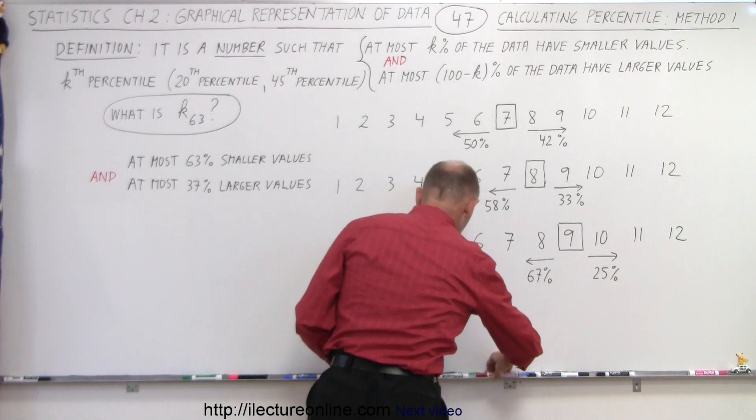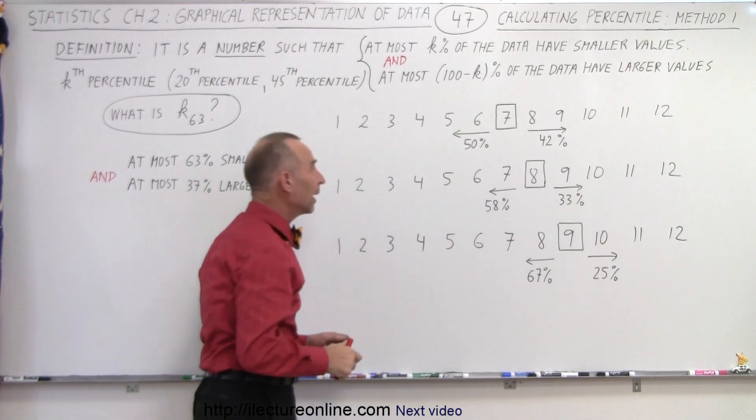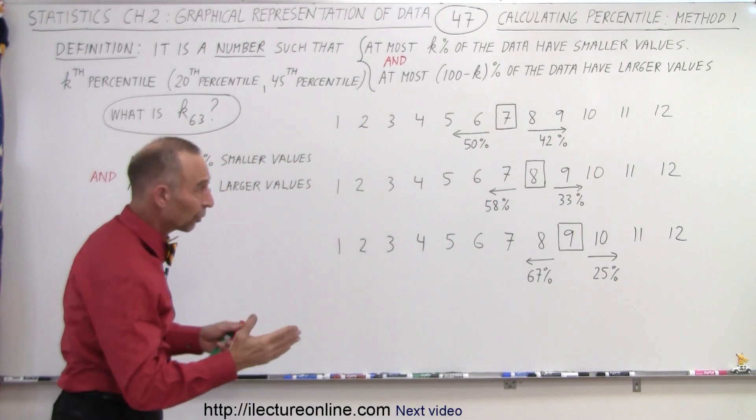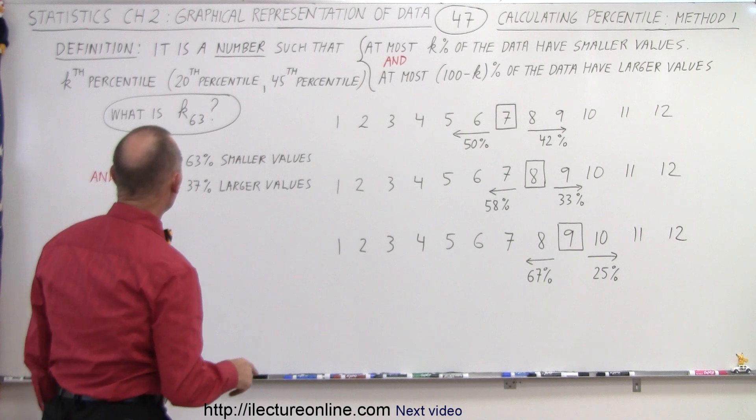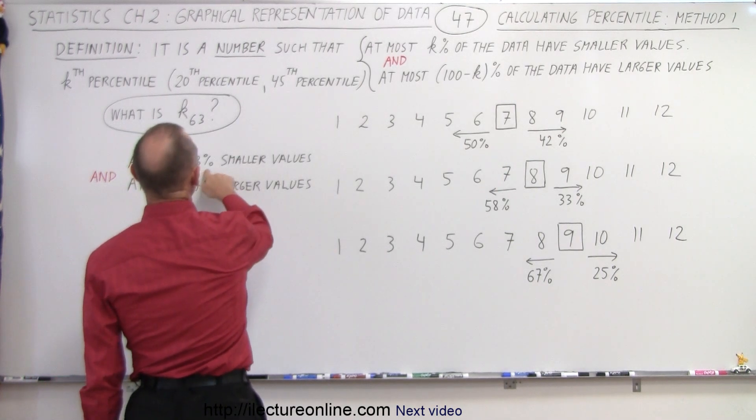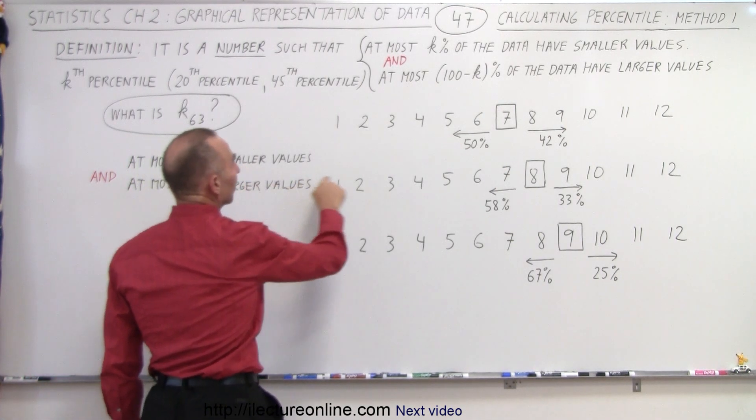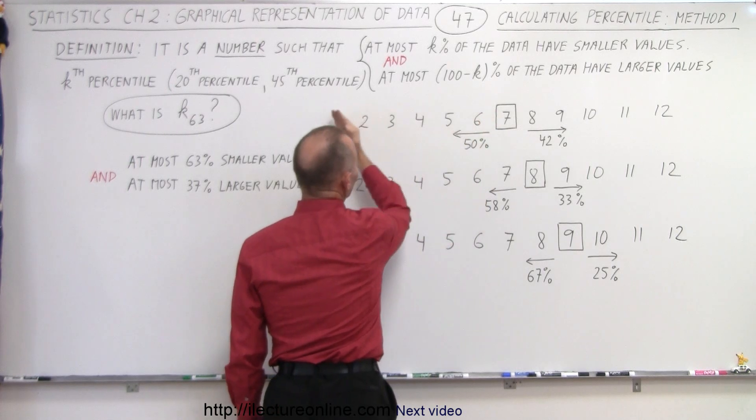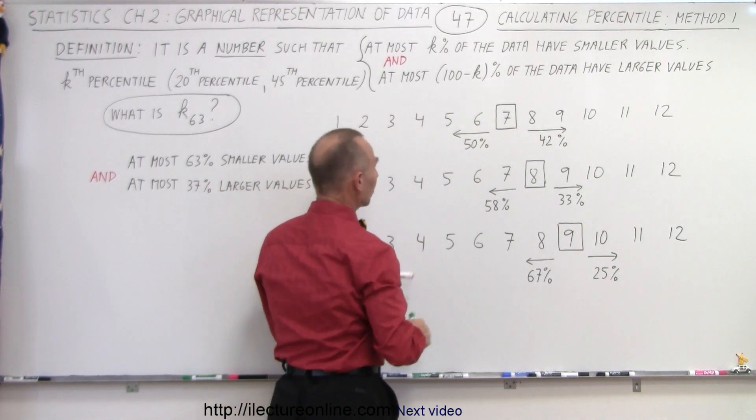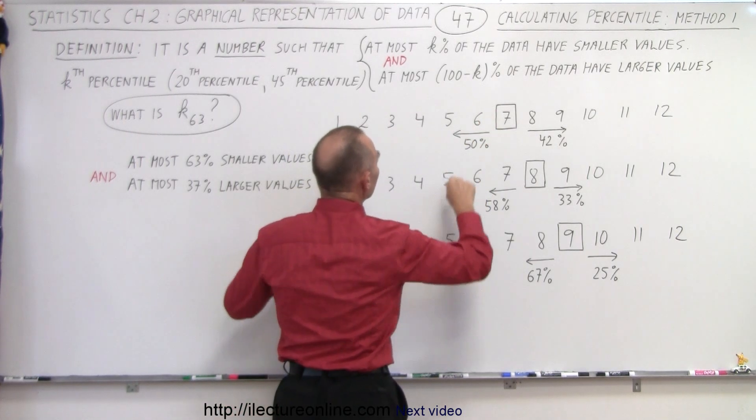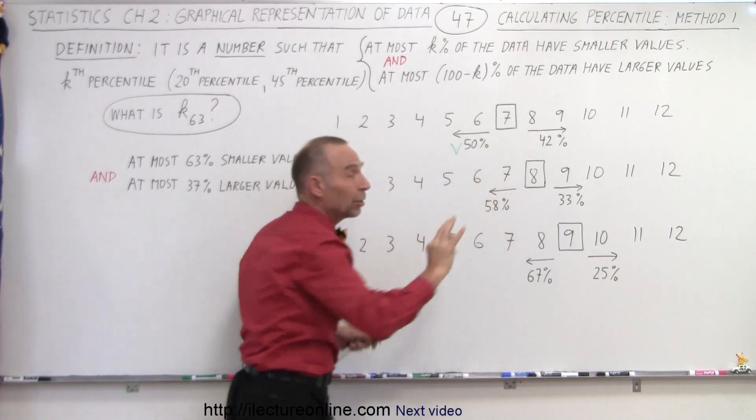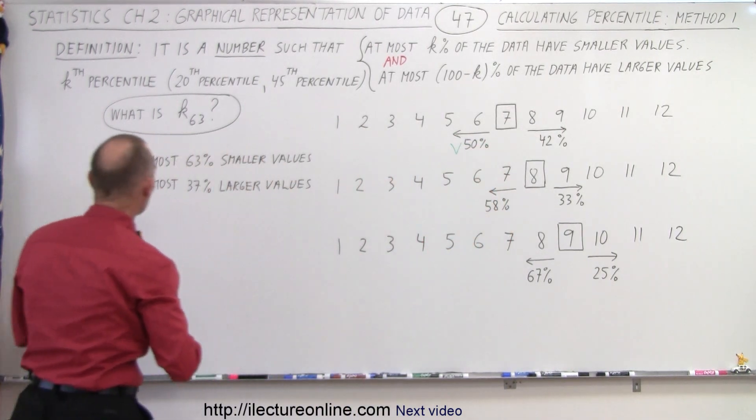So I'll grab a red pen and I'll grab a green pen. And if it's red, then of course we can use that. So, are at most 63% of values smaller than the one we picked? And sure enough, there's six of them. That's only 50%. So that means this condition is met. And so that means that 7 would be good if it also meets the other condition.